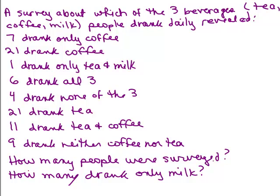So let's answer a couple of questions. How many people were surveyed and how many drank only milk? Hopefully, if you've been watching my videos, you know you can't just add those numbers up because there's some intersections going on. So since we're talking about three different things, tea, coffee, and milk, let's do a Venn diagram with three sets.